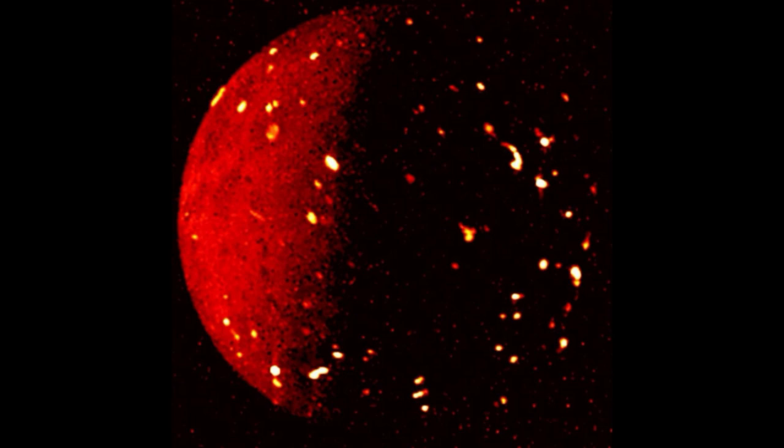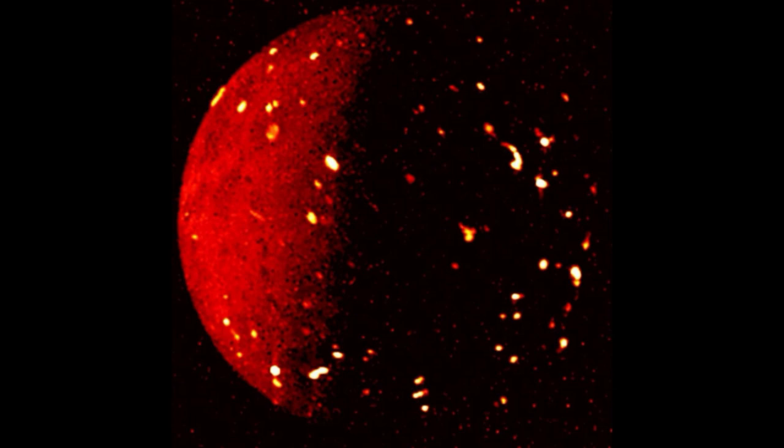Io is home to hundreds of volcanoes, NASA has found. Surprisingly, scientists found more volcanic spots in the polar region than in the planet's equatorial region.